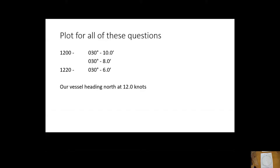Basic introduction to radar plotting. For all of these questions, the plot revolves around a 20-minute plot, where at 12:00 the target was bearing 030 at 10 miles. At 12:20 it was 030 at 6 miles, and at 12:10 it would have been 030 at 8 miles. Our vessel is heading north at 12 knots throughout.